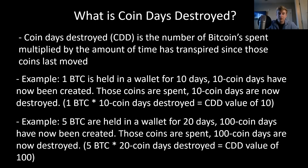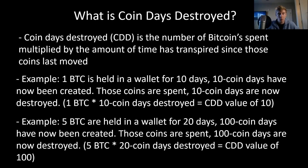So those coins are now spent — the one BTC that sat in the wallet for 10 days is now spent. 10 Coin Days are now destroyed because we're doing one BTC times 10 days, giving a Coin Days Destroyed value of 10. Our second example: five BTC are held in a wallet for 20 days. A hundred Coin Days have now been created because we multiply five BTC by the time those coins have been held. That gives us a Coin Days created value of 100. Those coins are then spent, so 100 Coin Days have now been destroyed. To do the math: five BTC times 20 days equals a Coin Days Destroyed value of 100.